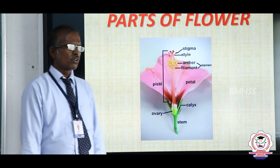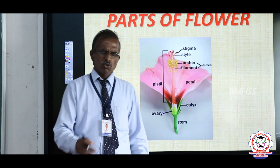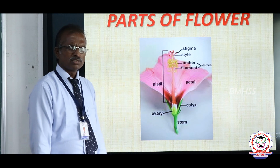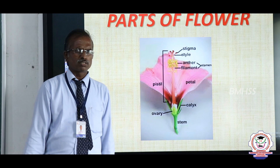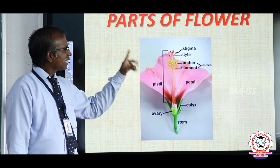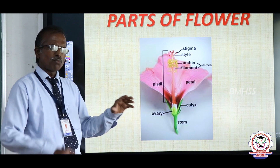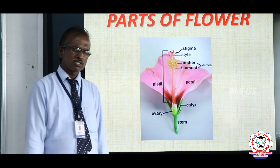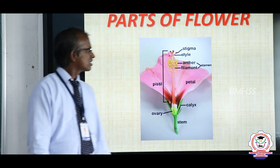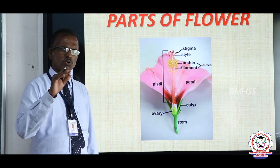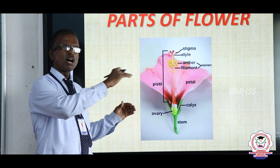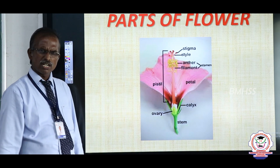Now, as we recall from earlier studies, we learnt about parts of a flower. Flowers are the reproductive parts of a plant. Almost all flowering plants bear flowers. A flower has 4 parts, and they are arranged in a ring or whorls.